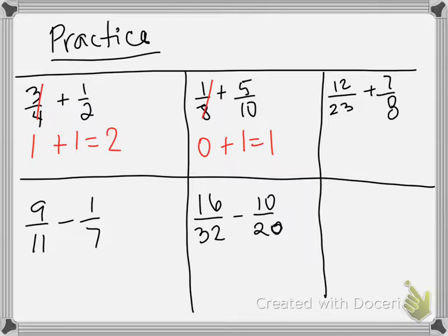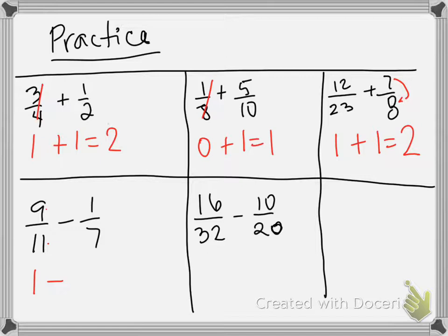Next, 12/23: since 12 is half of 24, and 23 is a little bit more than 24/2, this number is going to be closer to 1. Plus 7/8 — the 7 is very close to the 8, so that's at the right end of the number line, making it another 1. So 1 plus 1 is 2. Then 9/11 — look at how close 9 is to 11 — that's going to be 1. Minus 1/7: the 1 is really far away from 7, so that's 0.